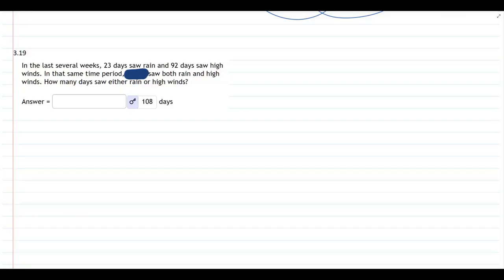This question could be asked a different way. 23 days saw rain and 92 saw high winds. Instead of asking how many days saw either, if they tell us how many days saw either and ask how many days saw both.